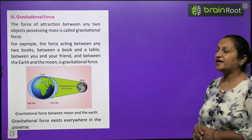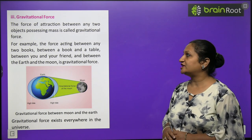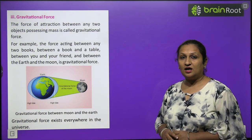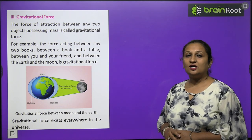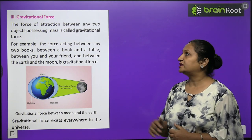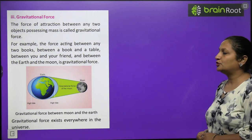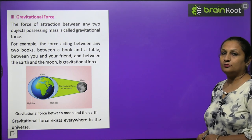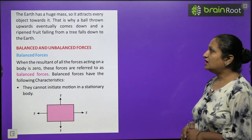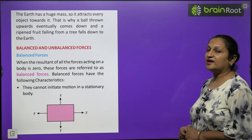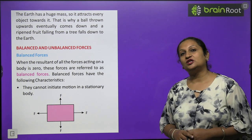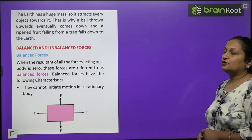Gravitational force: the force of attraction between any two objects possessing mass is called gravitational force. We stand on the ground because the earth pulls us towards itself by gravitational force. Fruits on a tree always fall downward because earth's gravity pulls them. Gravitational force exists between any two books, between you and your friend, between the earth and moon — it exists everywhere in the universe. Earth has a huge mass, so it attracts all objects; even a ball thrown upward will come back down.